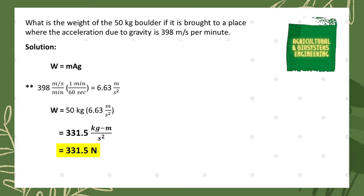So we have to convert it in the unit of meters per square second. We convert our minute unit into seconds using the conversion factor of one minute is equal to 60 seconds. With that we have now a final value for our acceleration due to gravity is 6.63 meters per square second.